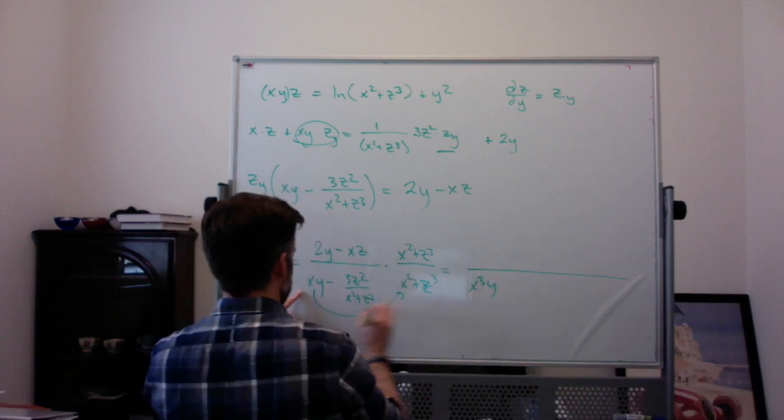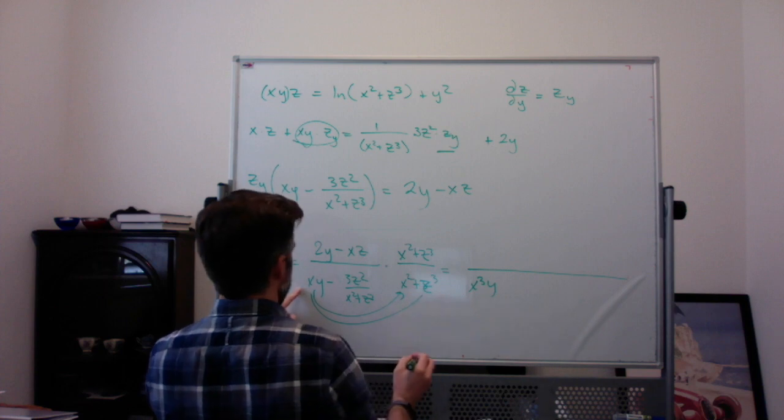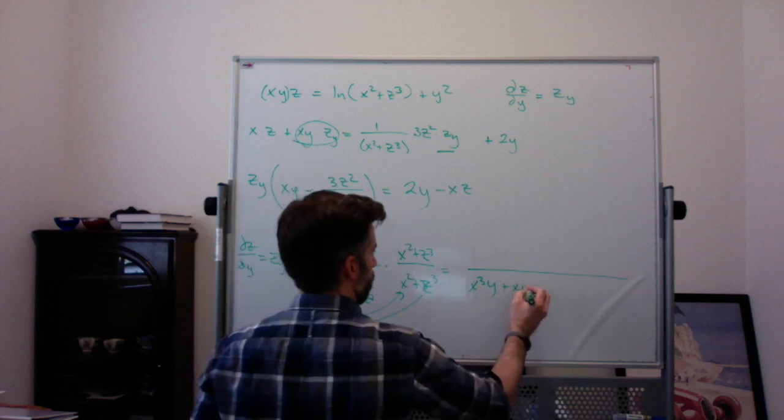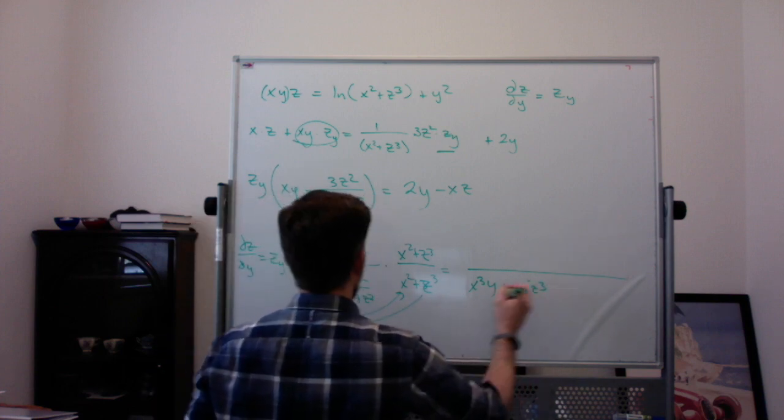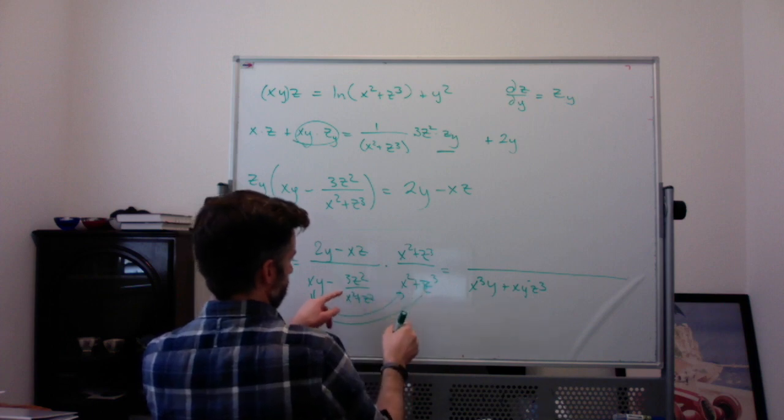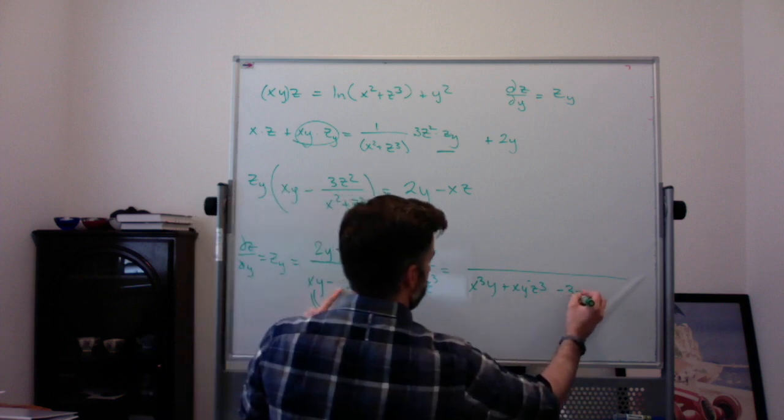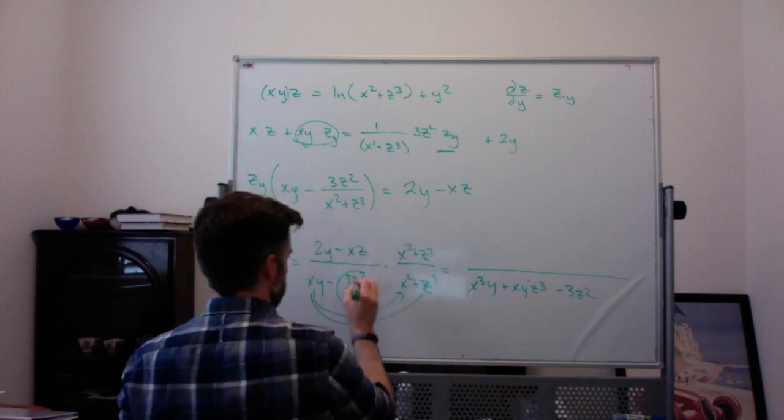All right. That's that times that. And then, xyz³. And then, minus this times that is going to be just minus 3z². And that's all of this times all of that.